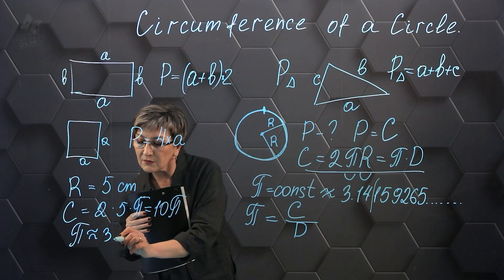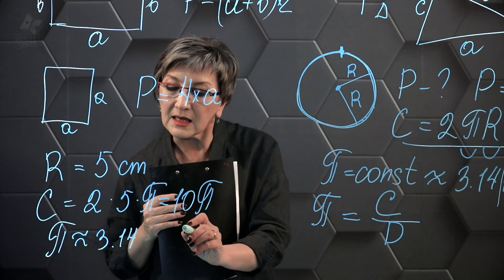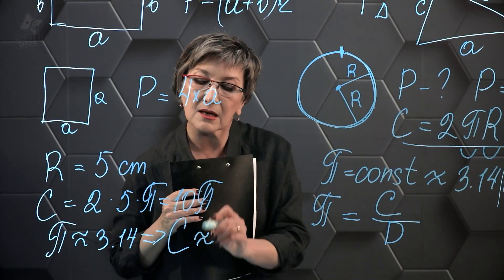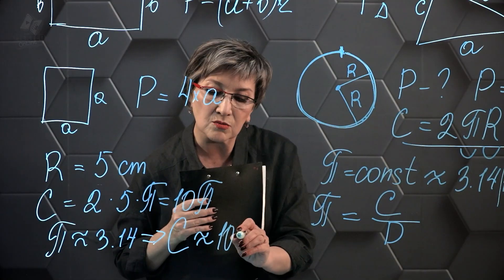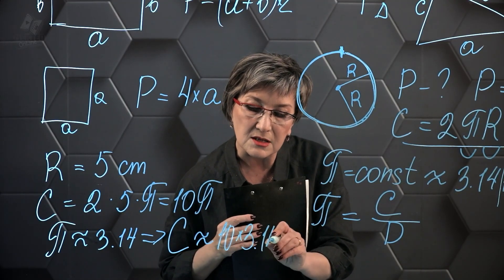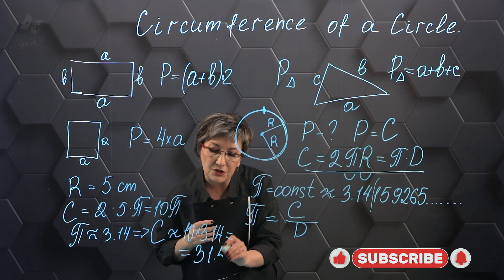And then the number of π would be approximately 3.14. And then the length of a circle would be approximately equal to 10 × 3.14. That's 31.4 centimeters.